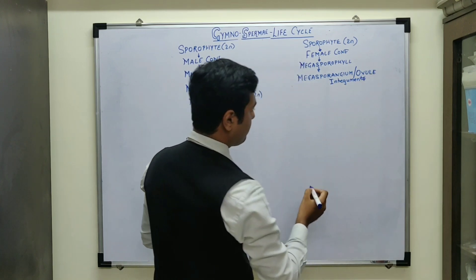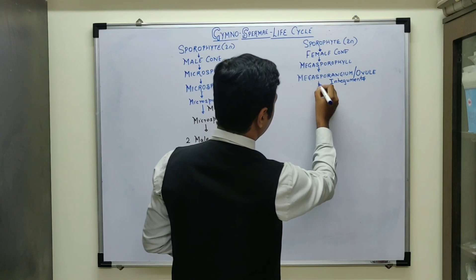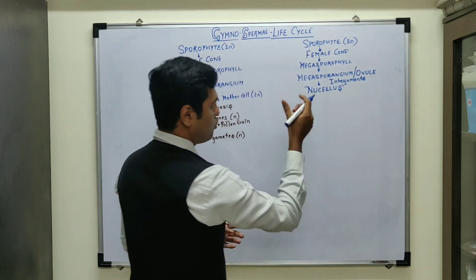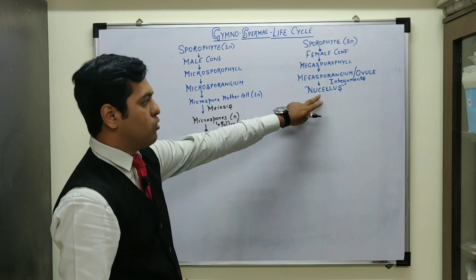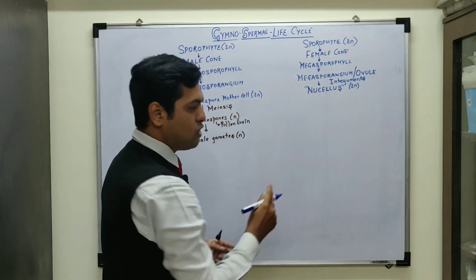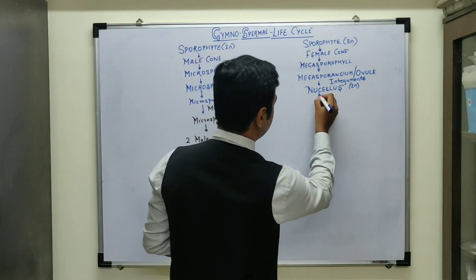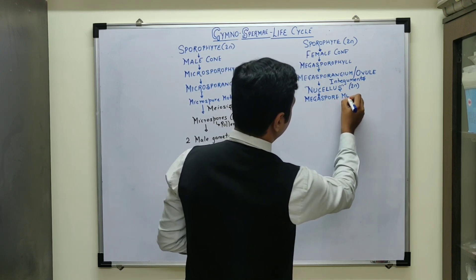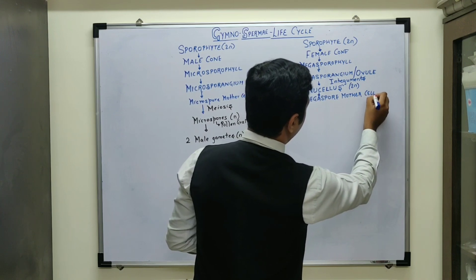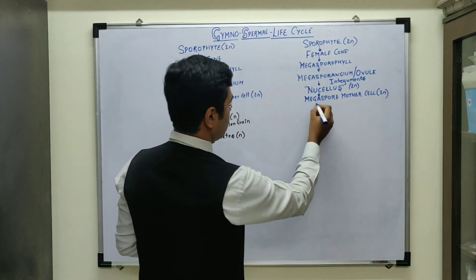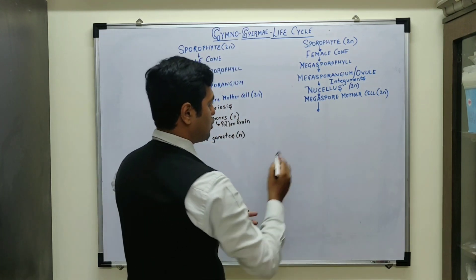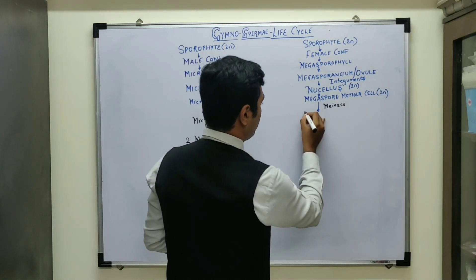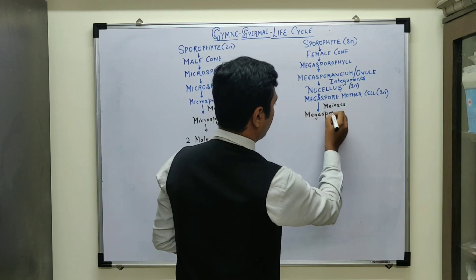In this ovule there is a special tissue which develops known as nucellus. So in the megasporangium or ovule there is development of a diploid tissue known as nucellus. Inside the nucellus a specific cell differentiates to form the megaspore mother cell, which is diploid. This megaspore mother cell now undergoes cell division — meiosis — just like the microsporangium mother cell did, and produces megaspores which are haploid.